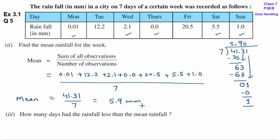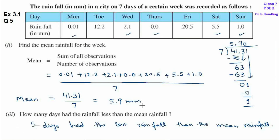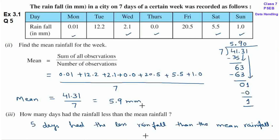So, total कितने number of days आ गए? 1, 2, 3, 4, 5. So, 5 days had less rainfall than the mean rainfall. Number of days is equal to 5.